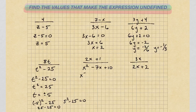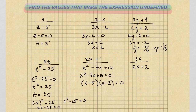Next one, we have x squared minus 7x plus 10 equals 0. We're going to factor this trinomial, giving us x minus 5 and x minus 2 equals 0. So we know that x equals 5 or x equals 2 will make that come true. If we plug in 5, then 5 minus 5 equals 0, and 0 times anything is 0. Same with 2: 2 minus 2 gives 0, and 0 times anything is 0. So here are the two values that make this expression undefined.